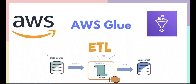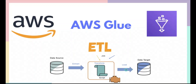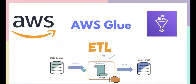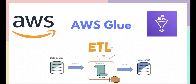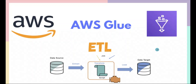ETL is a very important step in any data engineering or data processing pipeline. You have data sitting in a data source, you extract it and do some transformations — like filtering, cleaning, or joining different datasets. Once the transformation is done, you load the data to a data target, such as a data warehouse or a data lake. This process of extracting, transforming, and loading into a target is called the ETL process. There are many ETL tools available in the market, and AWS Glue provides one such option.